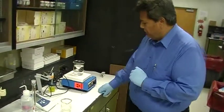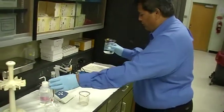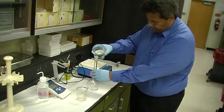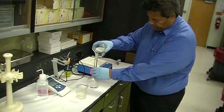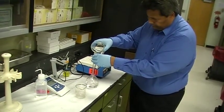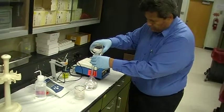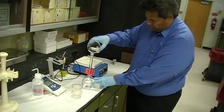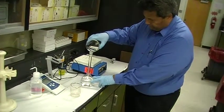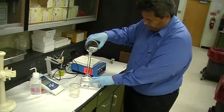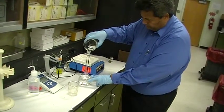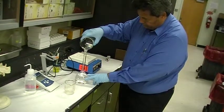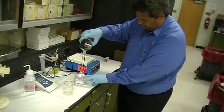The next thing you do is you turn the stirrer off, and you pour it into a 500 mil volumetric flask. And if you want, you can actually use a funnel for this one. But since we're just demonstrating it, I usually don't use a funnel. And make sure that all of the liquid has come out.